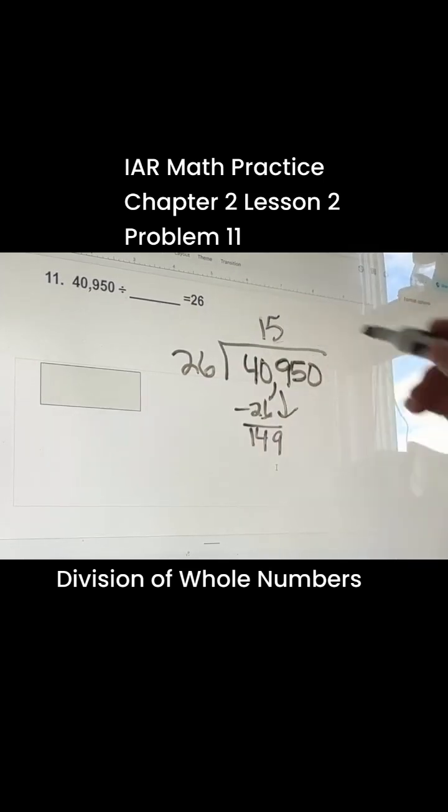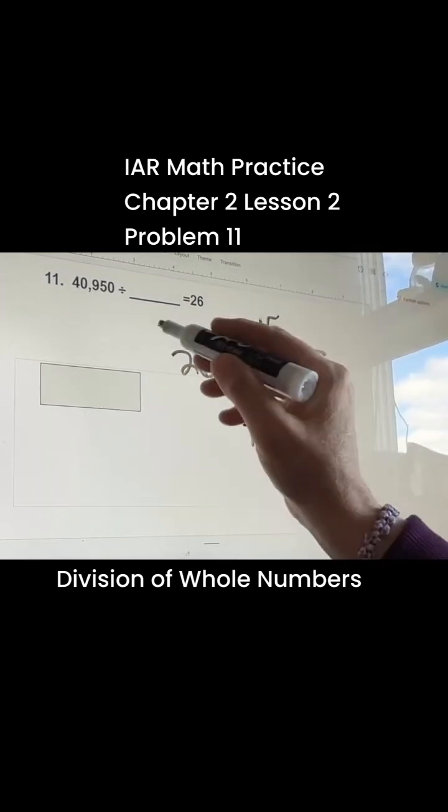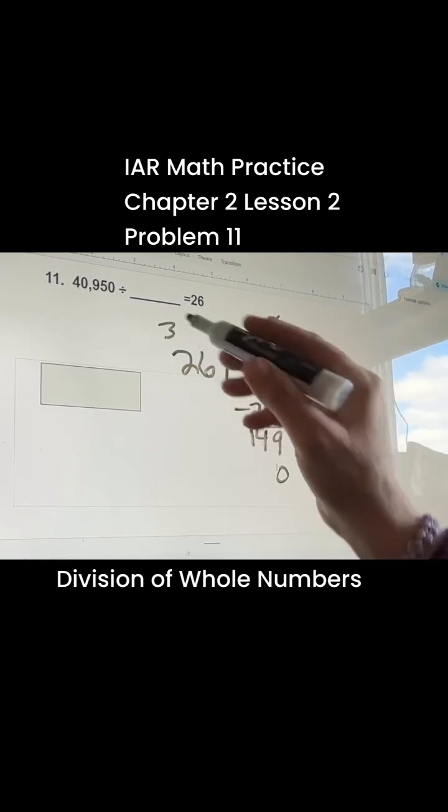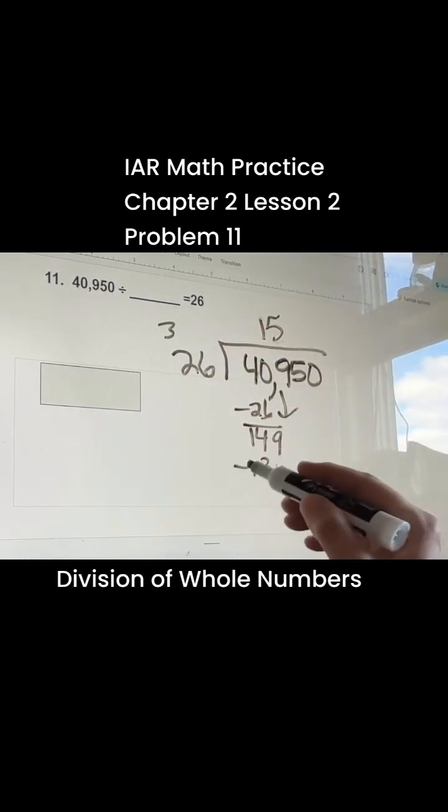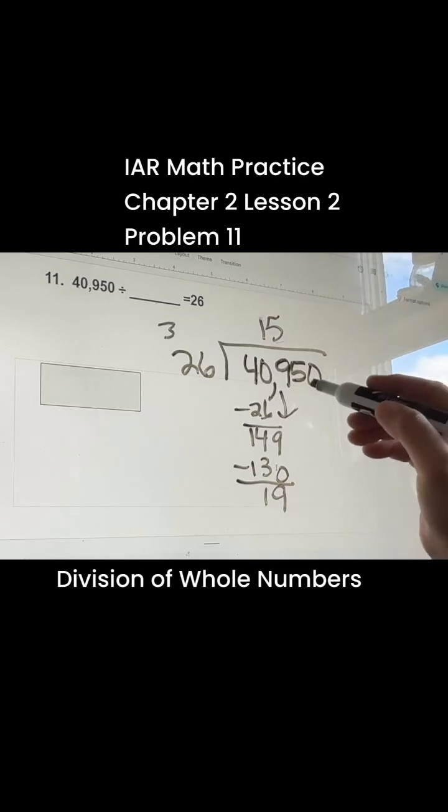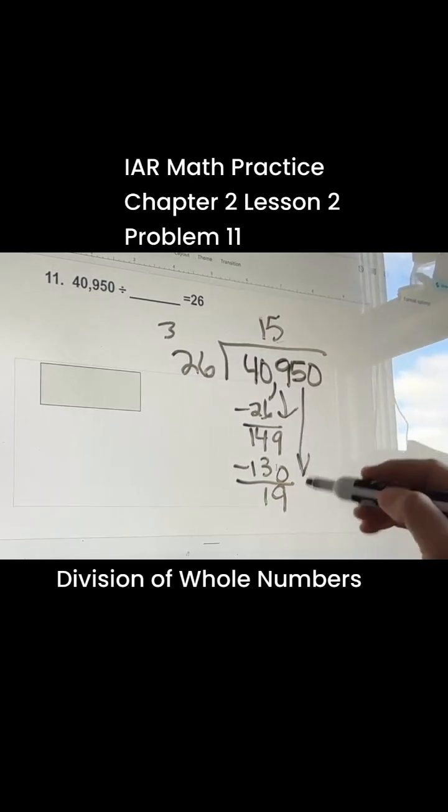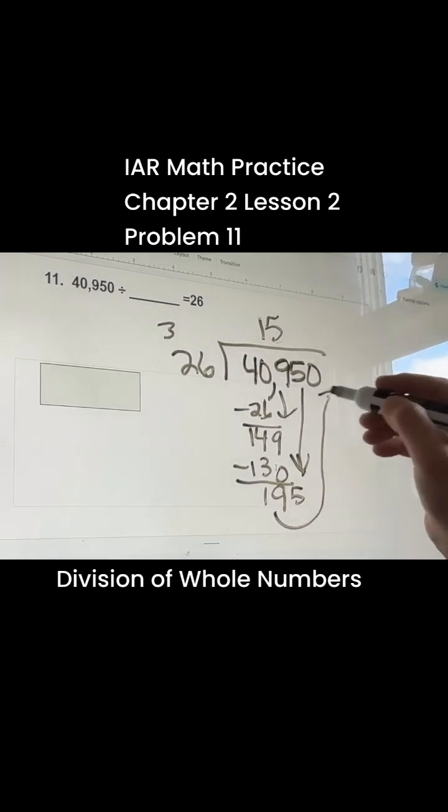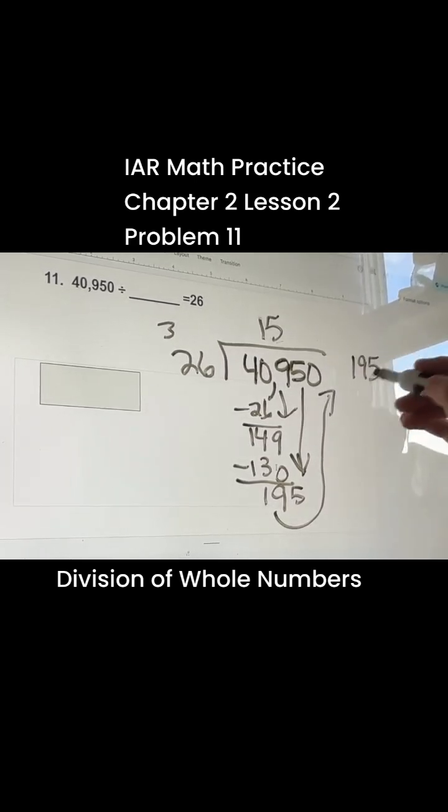How about 5? 30, 10, 13. That'll leave you 19, and we already brought down the 9. Bring down the 5, that's why I do my arrows, and we're going to just rewrite this up here so that it's easier for me. 195.